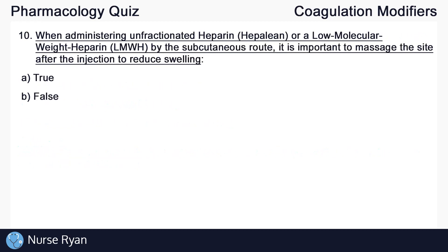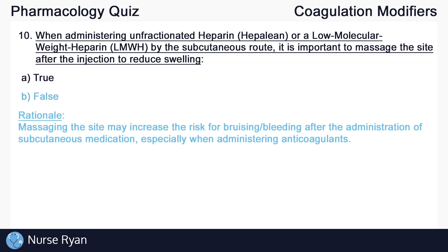Our last question, number ten: When administering unfractionated heparin or a low molecular weight heparin by the subcutaneous route, it is important to massage the site after the injection to reduce swelling. The right answer here is B, false. Massaging the site may increase the risk for bruising and bleeding after the administration of subcutaneous medication, especially when administering anticoagulants. And that's it for the coagulation modifier drugs quiz. If this video has helped you out please consider leaving a like and subscribe. If you have any questions or would like me to review a specific drug or topic, please let me know in the comments and thanks for watching.